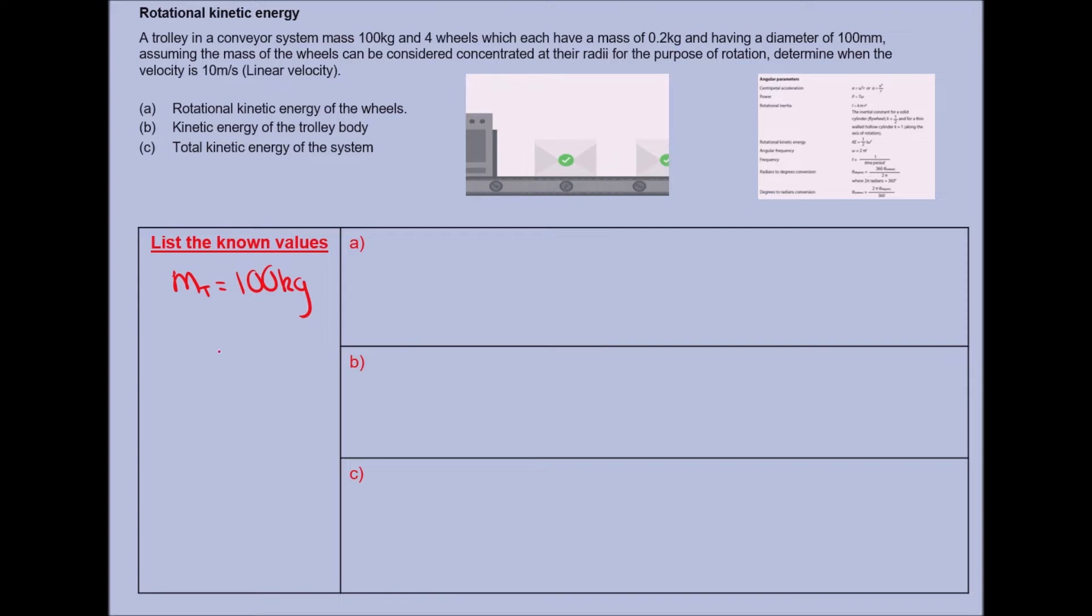So another mass, I'll put a little W there to represent wheels, that's 0.2 kilograms. Luckily, both of these are in the correct units for mass, so we don't need to transfer between grams and kilograms.